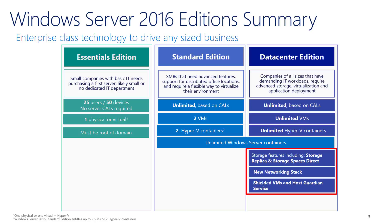In terms of CALs, both Standard and Data Center are unlimited based on the number of CALs purchased — we'll talk about what requires a CAL later in the FAQ. The base OEM licenses cover two virtual machines on Standard or unlimited VMs with Data Center Edition. We'll discuss the impacts of the core licensing changes as well. For Hyper-V containers, Standard gives you two Hyper-V containers versus unlimited with Data Center. We've covered containers in previous video updates; search the OEM team blog for more information.